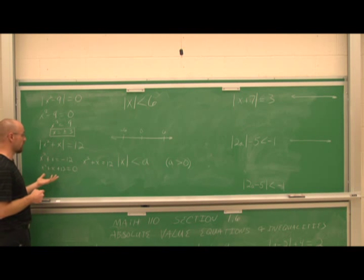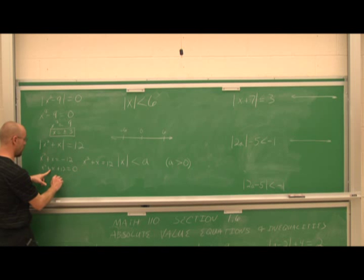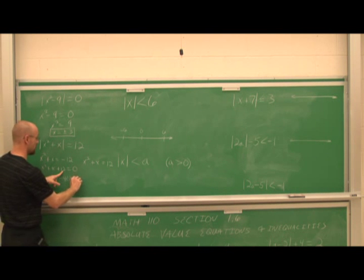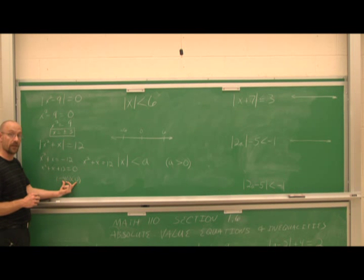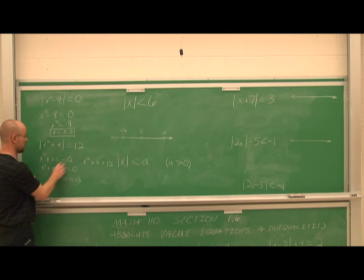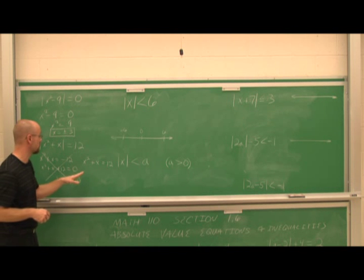So maybe we use the quadratic formula, or we can use the discriminant from a previous video. The discriminant is b squared minus 4ac: 1 squared minus 4 times 1 times 12. This value is going to be negative, which tells us this equation has an imaginary solution — not a real solution. So this equation won't give us real solutions.